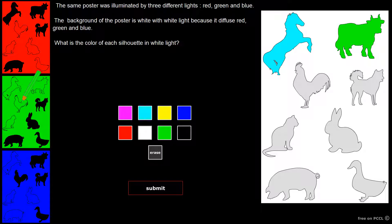The rooster restores red and green only. So it will be seen yellow.